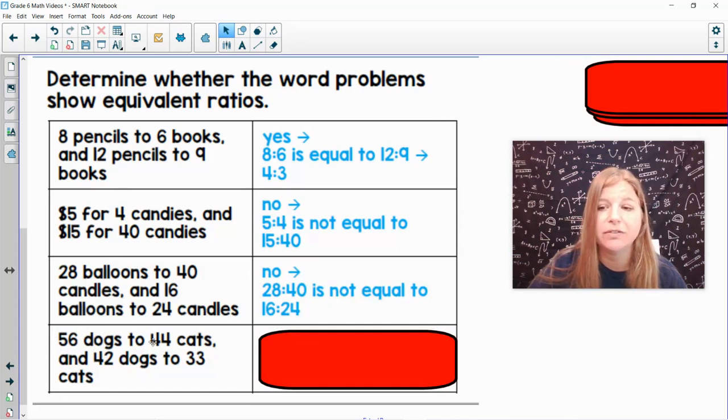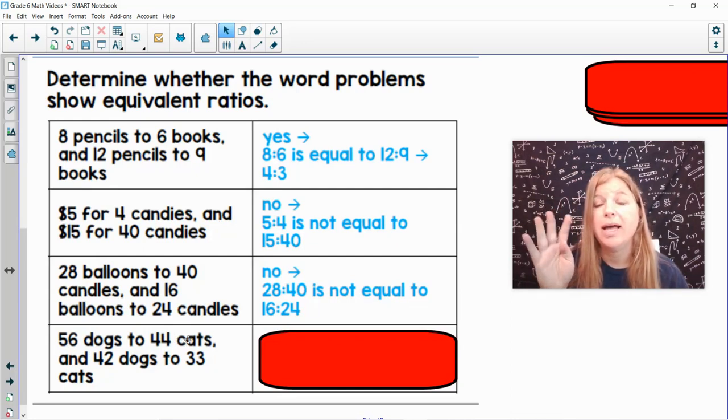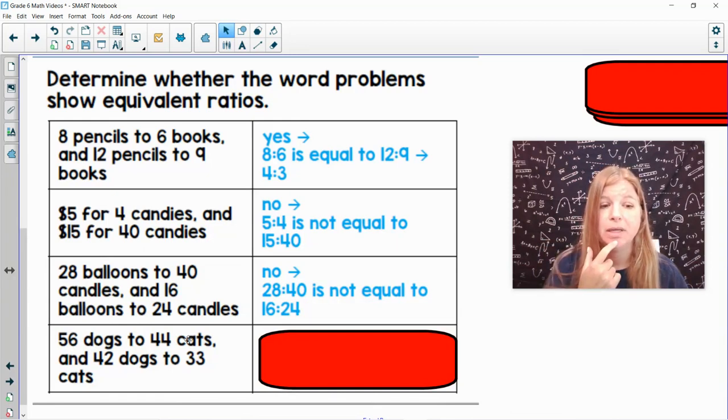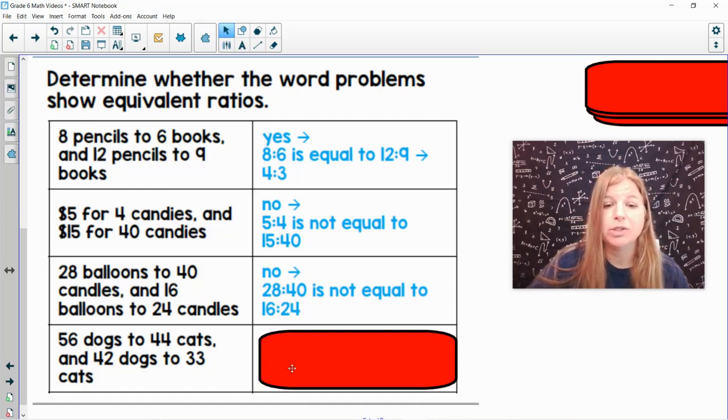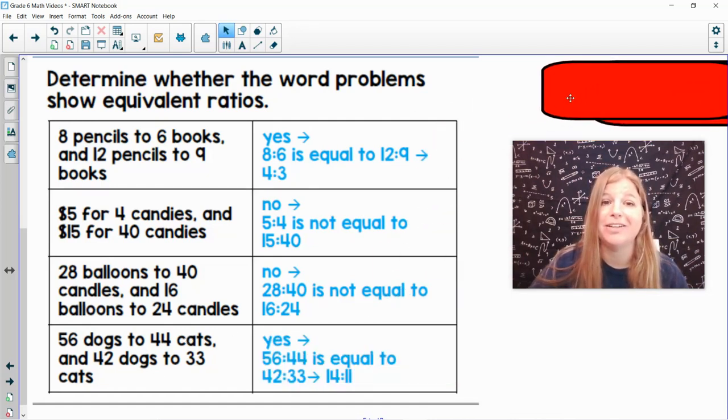Last one. 56 dogs to 44 cats and 42 dogs to 33 cats. 56 to 44, let's see, they're both divisible by 4. And if I divide those both by 4, I would get 14 to 11. 42 dogs to 33 cats, if I divide those by 3, 42 divided by 3 is 14 and 33 divided by 3 is 11. So those are both 14 to 11 and they are definitely equivalent.